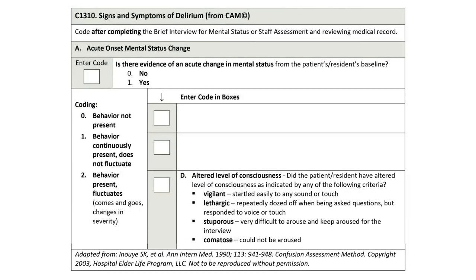Comatose is defined as the patient or resident not being able to be aroused despite shaking and shouting. For C-1310D – Altered Level of Consciousness: Code 0 – Behavior Not Present if all sources agree the patient was alert and maintained wakefulness during conversation, interviews, and activities. Code 1 – Behavior Continuously Present, Did Not Fluctuate if the patient was consistently lethargic, stuporous, vigilant, or comatose. Code 2 – Behavior Present, Fluctuates if the patient's level of consciousness varied — for example, at times alert and responsive, while at other times lethargic, stuporous, or vigilant. Code as fluctuating if information sources disagree.